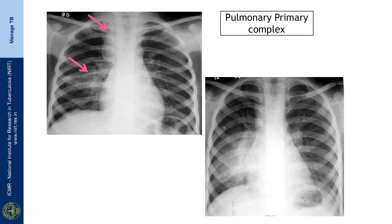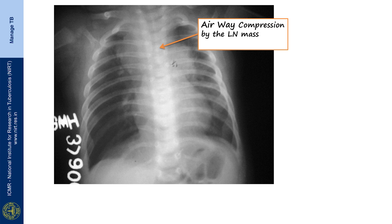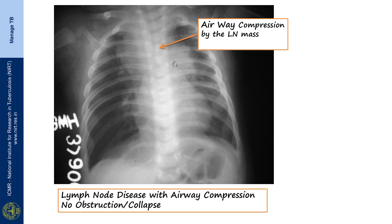Sometimes there may be large supra-mediastinal widening, and comparing the two sides, one lung looks hyperinflated while the airway looks narrowed on the other. This suggests the lymph node is causing compression — another sign which may be seen in primary complex when the primary disease is progressing.